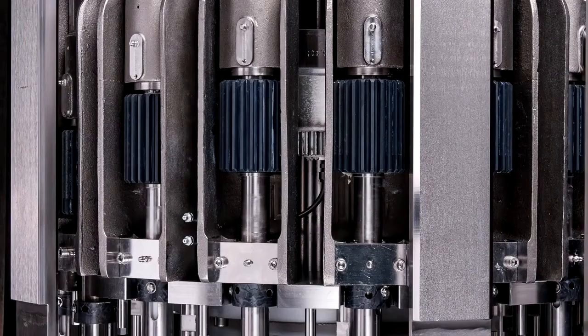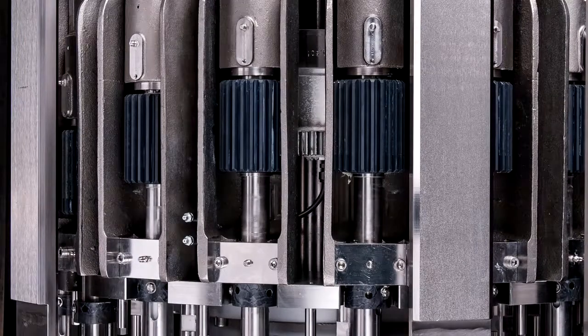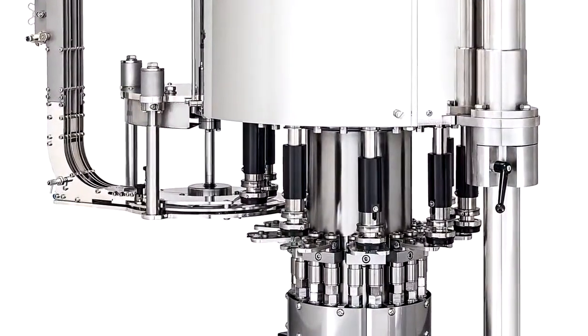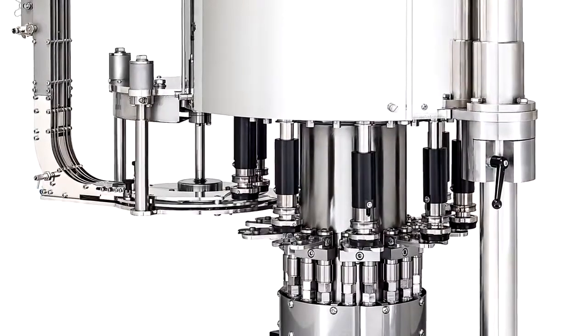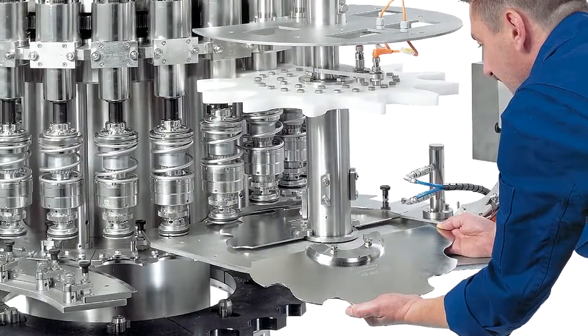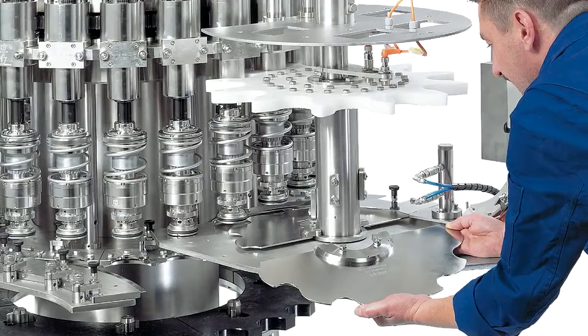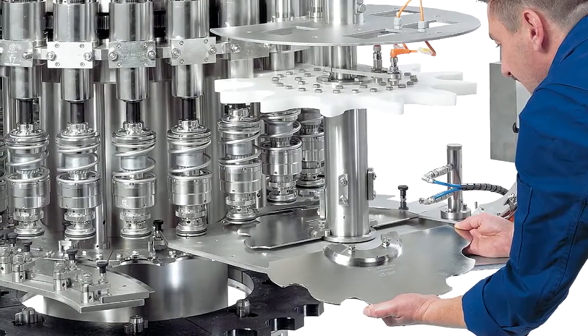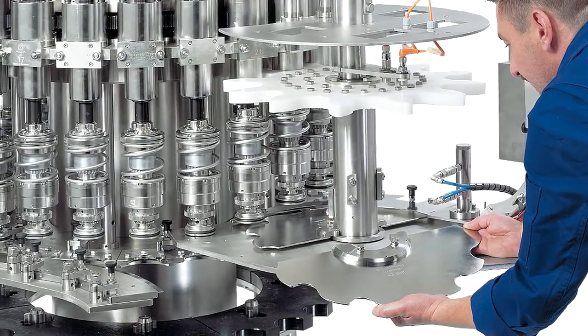The size of a capping machine and the number of heads will depend on the speed of the production line and the specifications of the equipment the capper mates to. A large capping machine can have over 40 heads and will run at speeds in excess of 1200 bottles per minute.